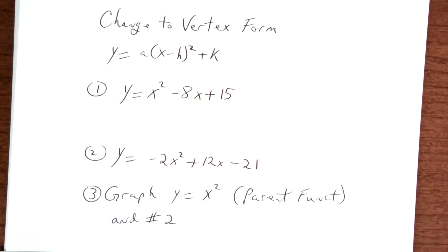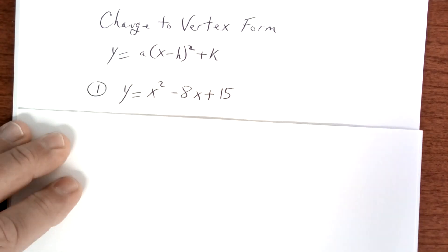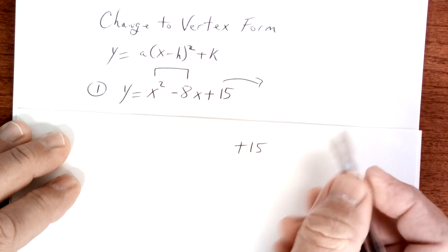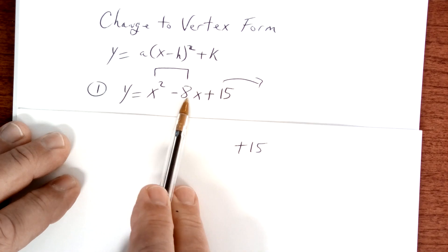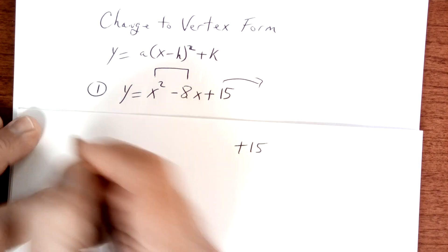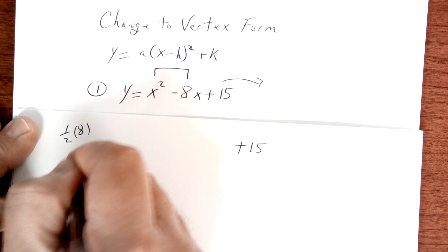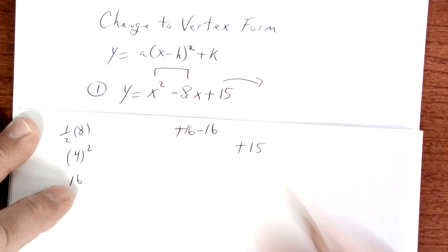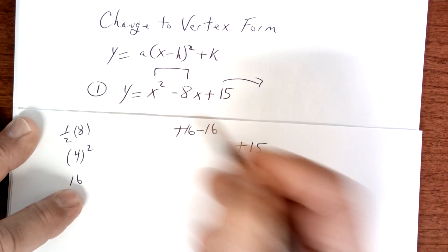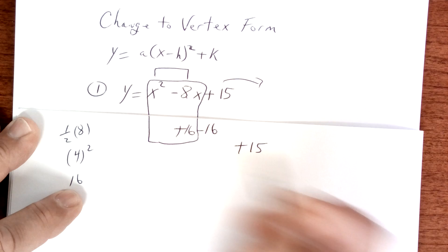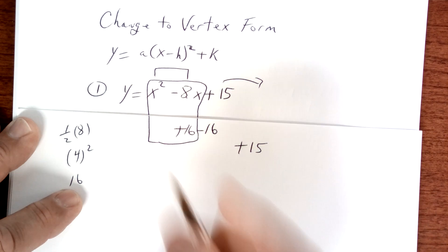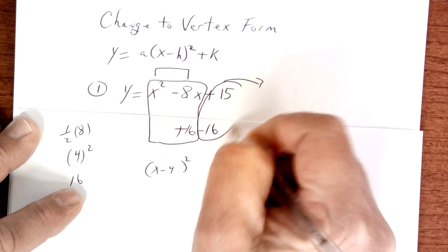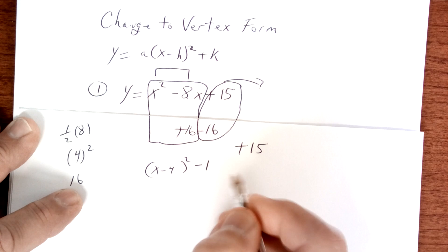So on this right here, what you're going to do is first try to factor something out of these two. I'm going to move the 15 way over here just to get it out of the way. Well, I can't factor anything out of here other than a 1. So I'm going to take half of 8, which is 4, and 4 squared is 16. So I'm going to add 16 and subtract 16. So when I add 16, this right here is going to become a perfect square trinomial. So that's going to be x minus 4 quantity squared. And then this right here, when I add those two up, I get a negative 1. And that should be it for the first one.